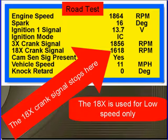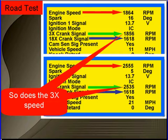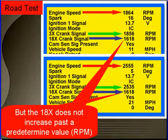Special note here: the 18x signal on this vehicle stops at 1618 RPM. The 18x is used for low speed only on this vehicle. Notice that as engine speed increases, so does the 3x speed, but the 18x does not increase past a predetermined RPM — it's used for low speed only. Once again, we know this from vehicle-specific information.